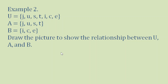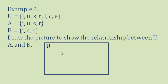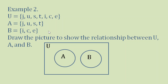First, we draw the rectangle representing the universal set U. Then we draw set A — a circle inside the rectangle. Before drawing set B, we check if there are common elements. There are none, so we draw set B not intersecting set A. We place the elements: J, U, S, T inside set A, and I, C, E inside set B. All elements are placed, so this is our drawing.